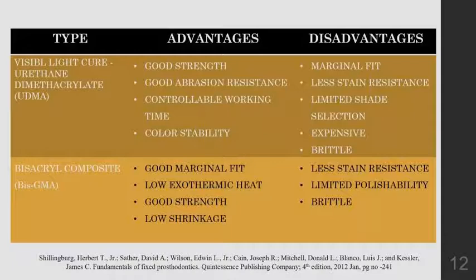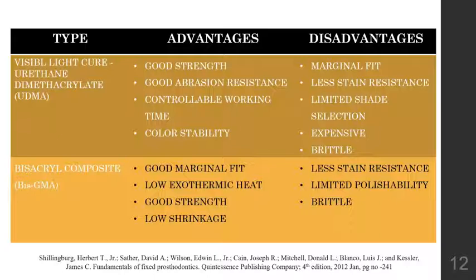Composites are available as auto-polymerized, dual-polymerized, or visible light-polymerized. The visible light-cure urethyl methacrylate was introduced around the 1980s and requires urethyl methacrylate for polymerization when catalyzed with visible light energy. It has good strength, good abrasion resistance, and color stability. The disadvantages include limited shade selection, less stain resistance, and poor marginal fit.